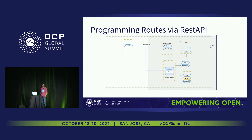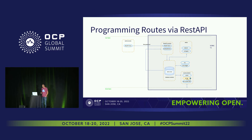For how we program those overlay routes with a next-hop toward the tunnel: in Sonic, there is a client — which can be a REST API client — and a REST API server. Configuration comes via REST, gets programmed into RedisDB, the route gets programmed into AppDB, and then SwSS reacts to that AppDB programming, does processing, and calls the SAI and SyncD APIs.